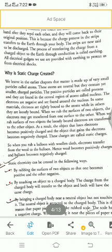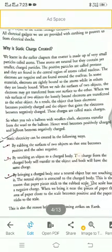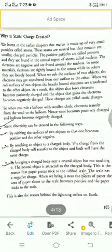The electrons are negative and are found around the nucleus. In some materials, electrons are tightly bound to the atoms, while in others they are loosely bound.